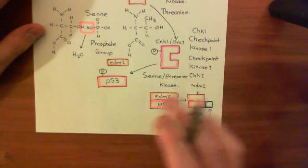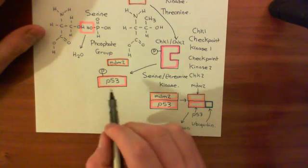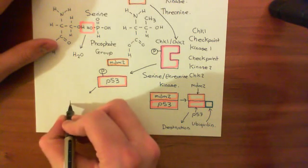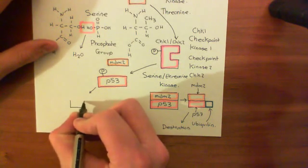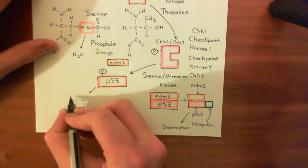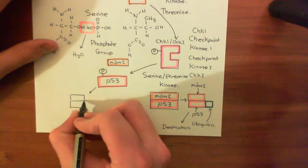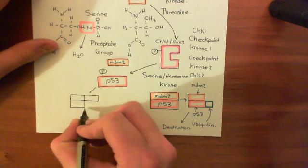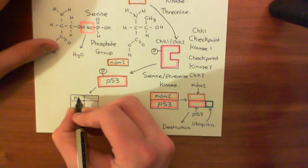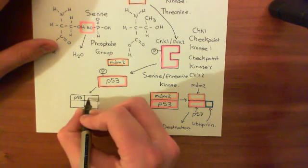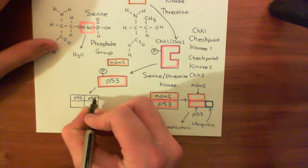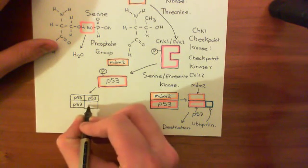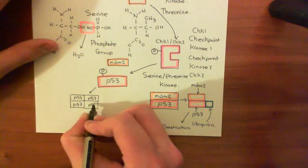Technically it tetramerizes, and then it's a transcription factor. What happens is you get a tetramer of these P53s all going into the nucleus, and those are going to activate the transcription of certain genes. Here's our tetramer of P53s that are all active, and this tetramer of P53s is then going to activate the transcription of certain genes. We'll have a look at which genes are activated in the next video.